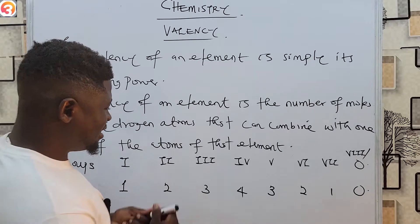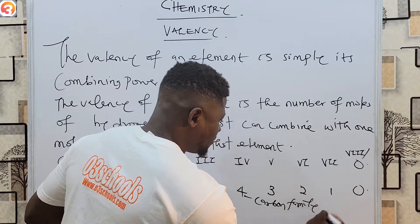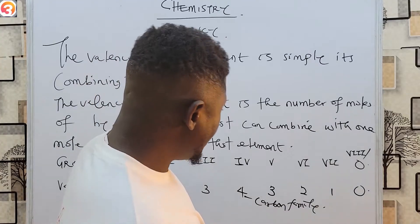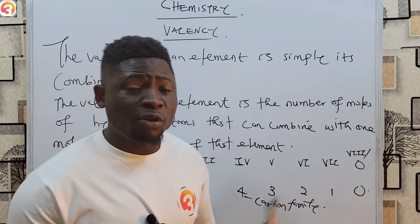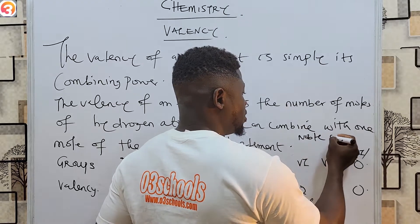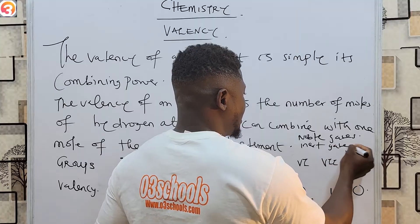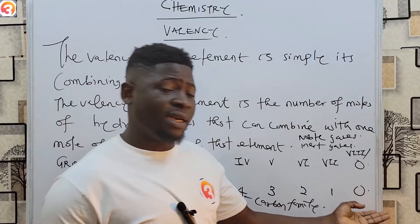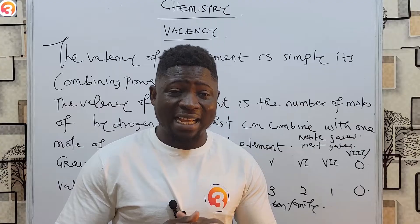If you observe carefully, you can notice that elements in group four have the highest valency — this is the carbon family. The carbon family has the highest valency. Meanwhile, elements in group eight or group zero have no valency at all. These elements are called the noble gases, also known as inert gases.